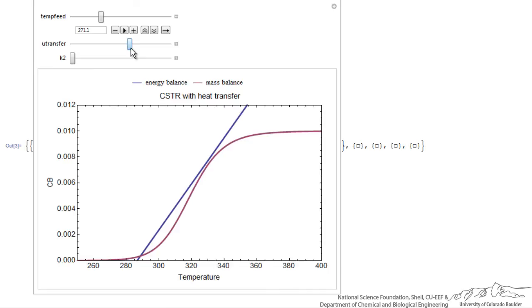I can change this enough, so for example, for this feed temperature, I have only one solution. And for a higher feed temperature, I have one solution also. And here, if I decrease the heat transfer coefficient, I can go back to the possibility of three solutions.